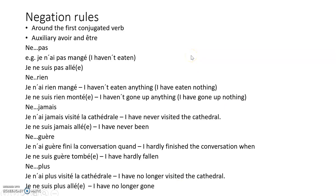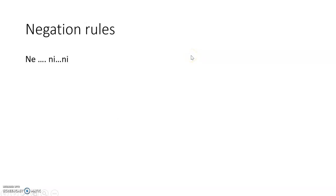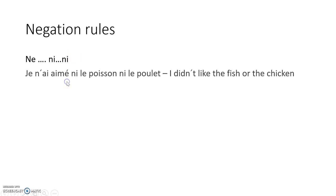Now we come to ones where, as in the present tense, they don't all go around the auxiliary verb. Ne...ni starts before the auxiliary verb — soit avoir or être — then we have the past participle, then ni... ni... So: je n'ai aimé ni le poisson ni le poulet — the ni particles go after the past participle in the passé composé.